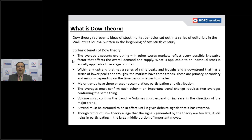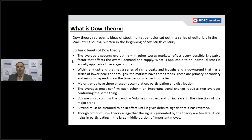The first tenet: the average discounts everything. Whenever certain events happen, the price will discount them. If some positive news is coming in the next two or three days, the stock moves from 100 to 120 during that period. When the actual news comes — regardless of its positivity — the stock price comes down. This means the price discounts everything; whatever price you see on the chart discounts all fundamental factors.